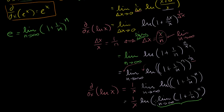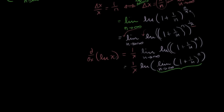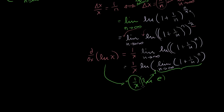e is defined as the limit as n approaches infinity of 1 plus 1 over n to the n — this is just the definition of e. And natural log is defined to be the logarithm of base e. So that limit is e, meaning I'm taking the natural log of e. I'm not using the derivative of e to the x at all — just the definition of e. The power you have to raise e to in order to get e is just 1. And therefore the derivative of the natural log of x is equal to 1 over x.